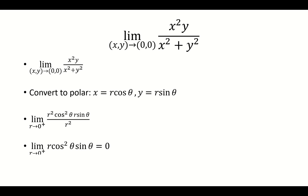Regardless, when we plug in r equals 0, we have 0 times cosine squared theta times sine theta, which is equal to 0. And so our final limit is 0.